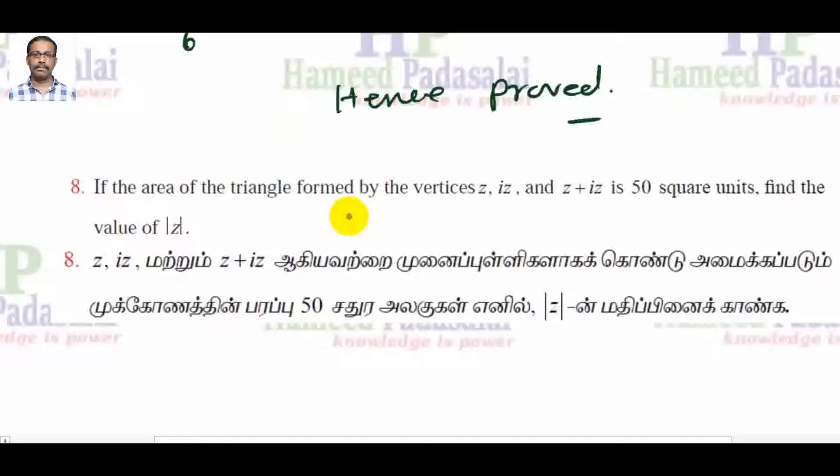Now we are going to discuss sum number 8. If the area of the triangle formed by the vertices Z, Iz, and Z+Iz is 50 square units, find the value of mod Z.